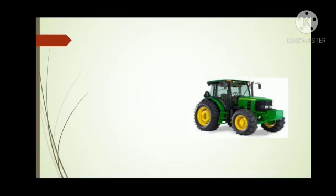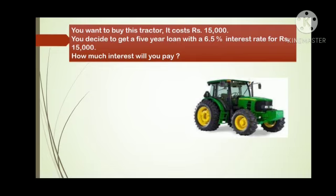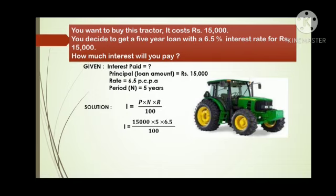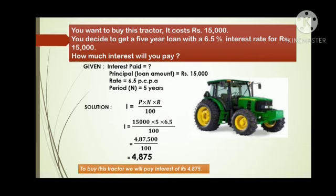Suppose you want to buy a tractor costing rupees 50,000. You decide to get a 5-year loan of rupees 15,000 at a 6.5% interest rate. How much interest will you pay? We need to find the interest to be paid to the bank after 5 years. Given: Principal P equals 15,000, N equals 5 years, and R equals 6.5%. Applying the formula SI equals P into N into R divided by 100, after calculation the answer is rupees 4,875. Therefore, to buy this tractor, you will pay an interest of rupees 4,875.